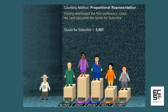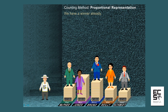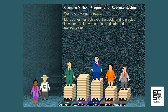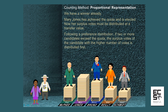The quota for Suburbia equals 5,001. We have a winner already — Mary Jones has achieved the quota and is elected. Now her surplus votes must be distributed at a transfer value. Following a preference distribution, if two or more candidates exceed the quota, the surplus votes of the candidate with the higher number of votes is distributed first.